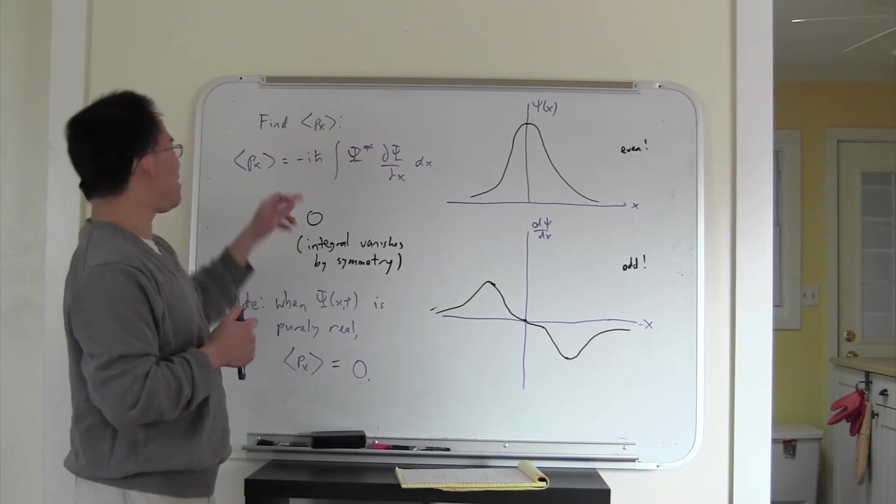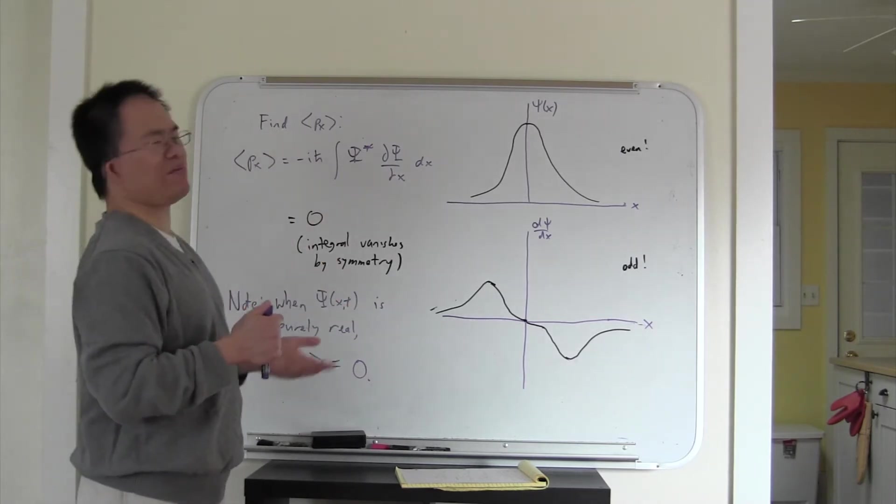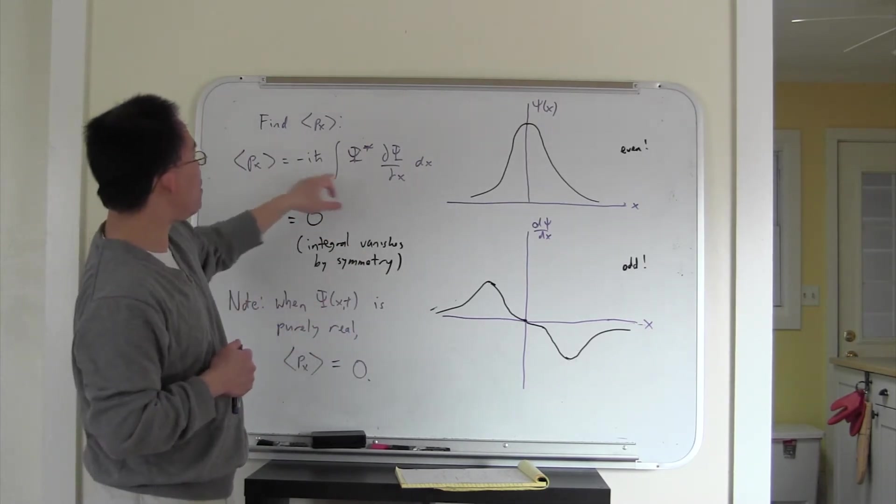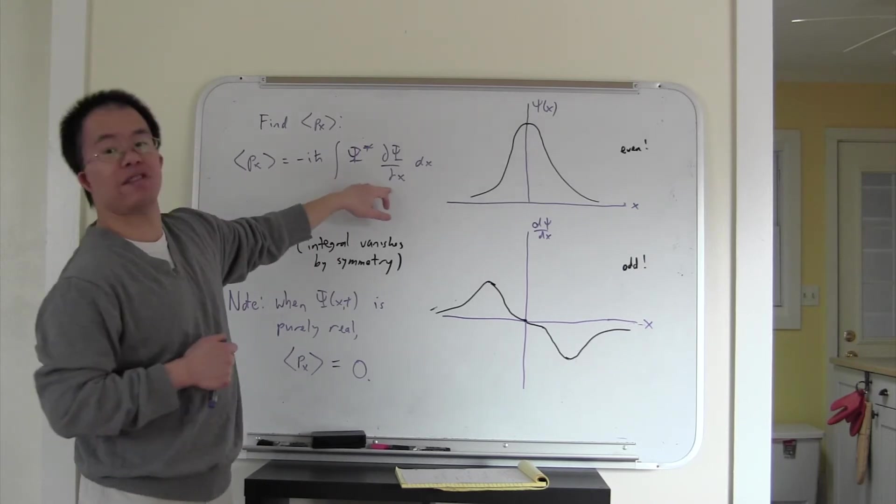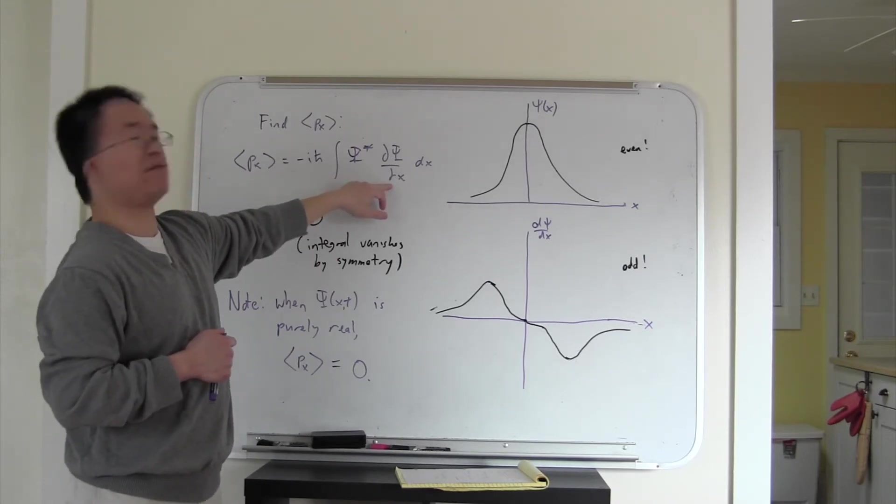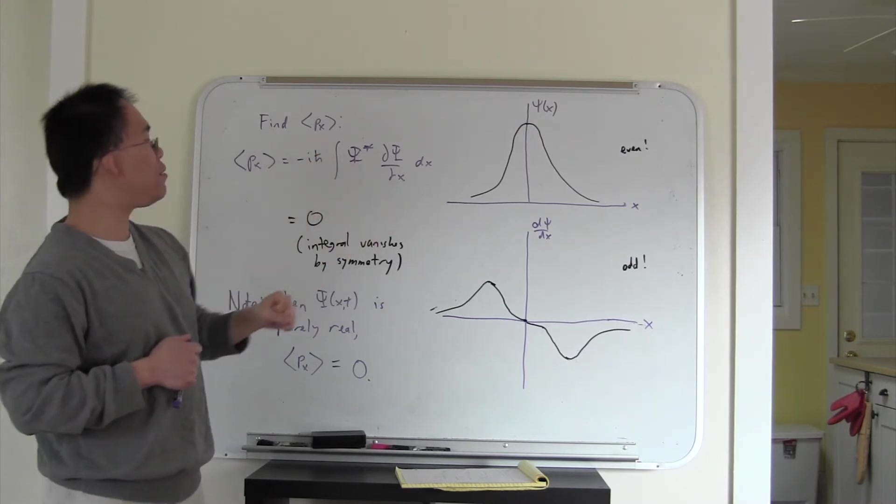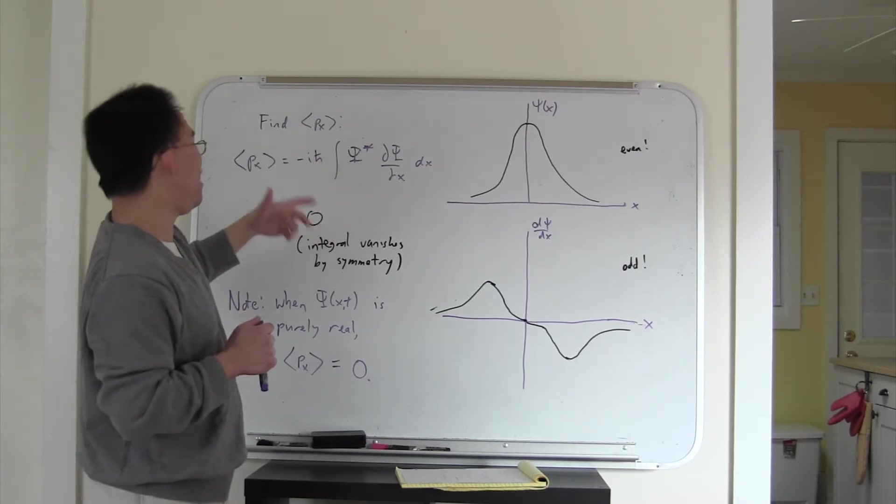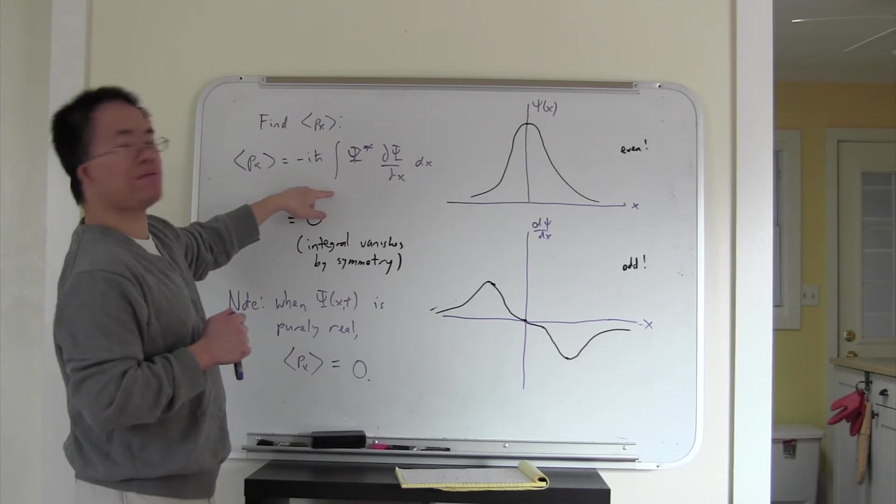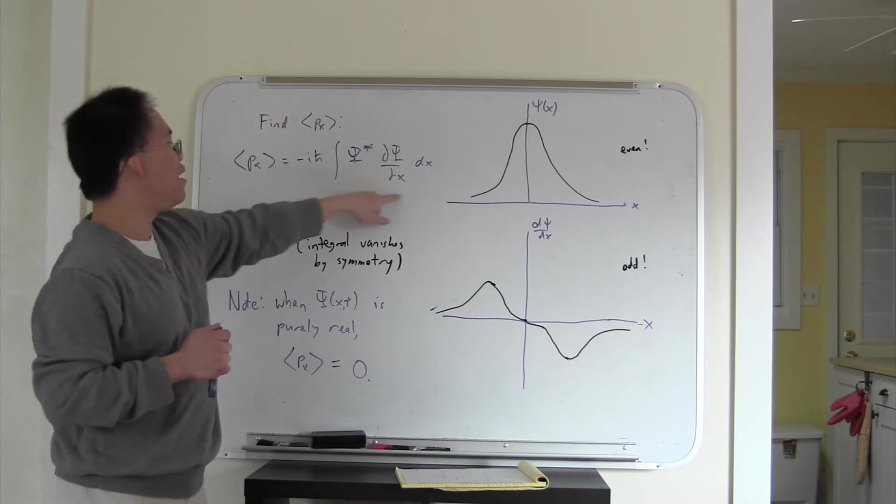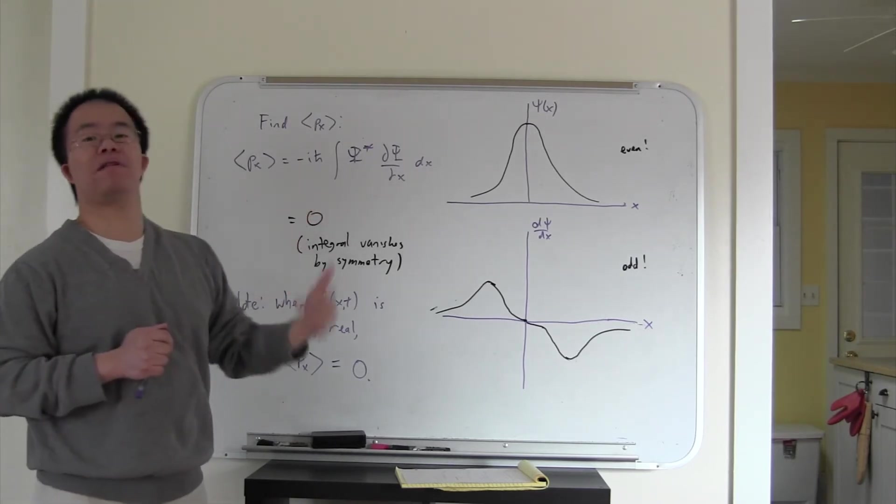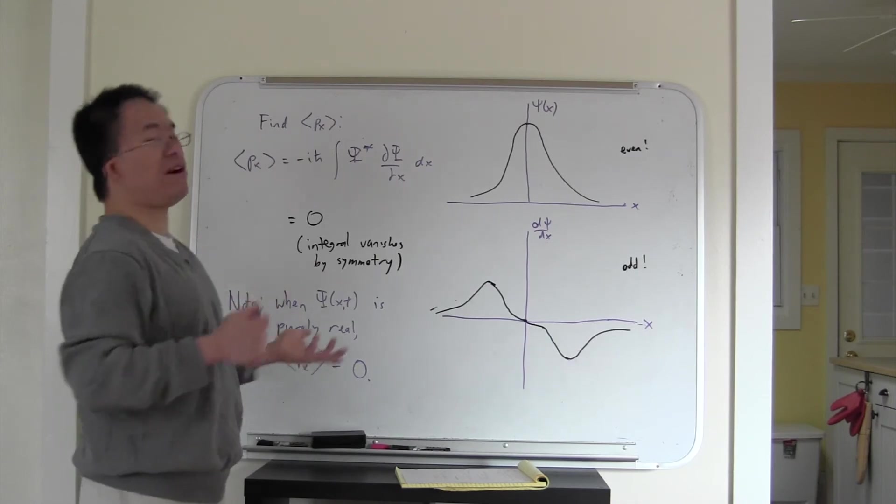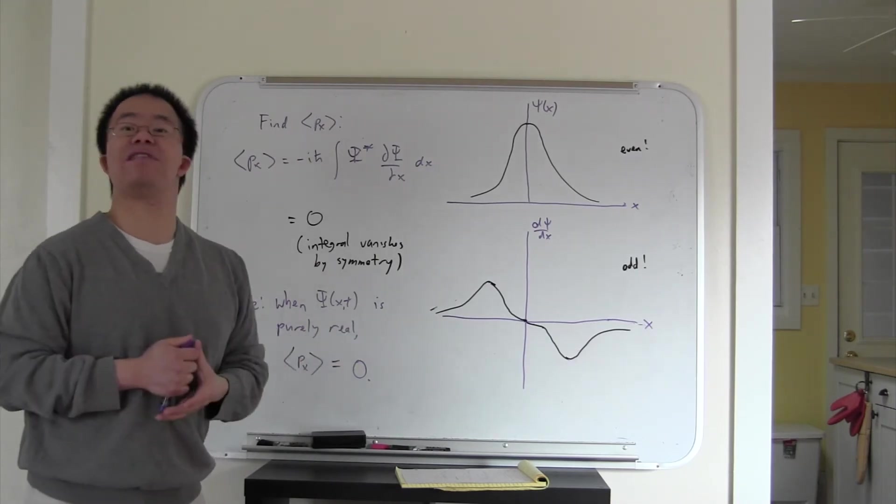It probably should not make any sense on physical grounds that you can have an imaginary expectation value for momentum. What does an imaginary momentum even mean? So if you think that momentum has to be real, or the expectation value of momentum has to be real, then if the wave function is pure real, its derivative is real, psi star is of course going to be real, this integral will always give you something real for a real wave function. And so if you have a pure real wave function, this entire expression over here is going to end up having to be imaginary if it were non-zero. So it turns out it always ends up being equal to zero.